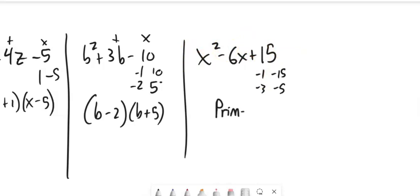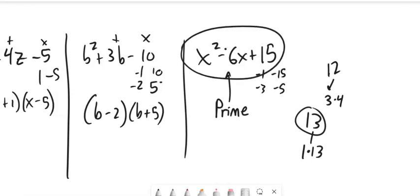So notice there's nothing here that works. Actually this one I can't factor, it's not factorable. If that happens I'm going to say it's prime. It's a prime polynomial, just like with numbers. 12 is not prime because I can write it as 3 times 4, but 13 is prime because the only way I can break it up is 1 times itself. This is a prime polynomial, it cannot be factored.